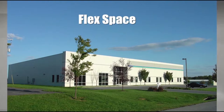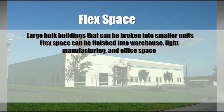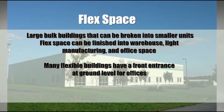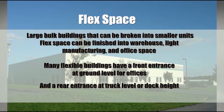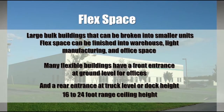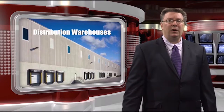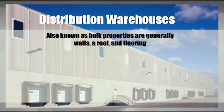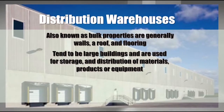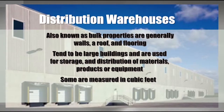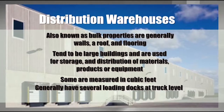Flexible or flex space refers to large bulk buildings that can be broken into smaller units. Often flex space can be finished into warehouse, light manufacturing, or even office space. Many flexible buildings have a front entrance at ground level for offices and a rear entrance at truck level or dock height. Ceiling heights are typically in the 16 to 24 foot range. The second type, distribution warehouses — also known as bulk properties — are generally walls, a roof, and flooring. They tend to be large buildings used for storage and distribution of materials, products, or equipment. Some distribution warehouses are measured in cubic feet because height can be important to some types of storage. A distribution warehouse will generally have several to many loading docks at truck level or may be set up with drive-in doors for trucks. These buildings generally have less than 15% office space and ceiling heights up to about 32 feet.